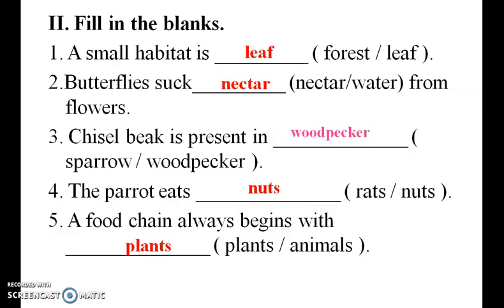Fill in the blanks. A small habitat is a leaf. Butterfly sucks nectar from flowers. A chisel beak is present in a woodpecker. The parrot eats nuts. A food chain always begins with plants.